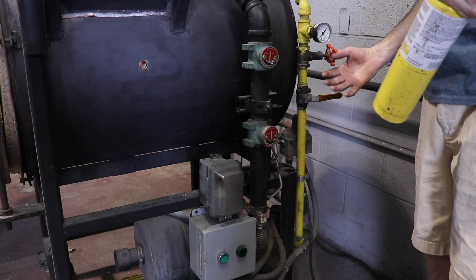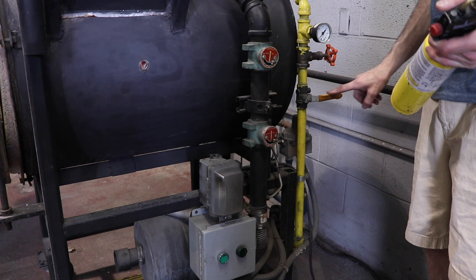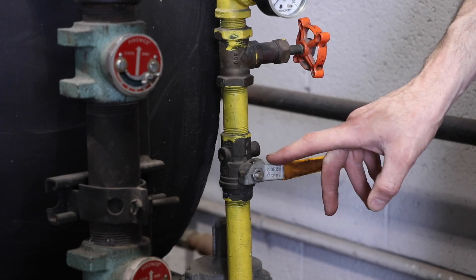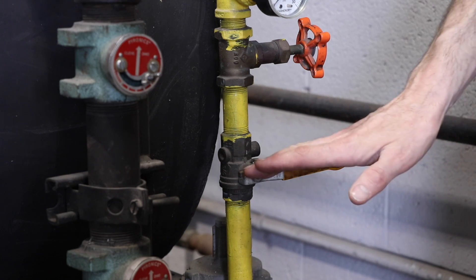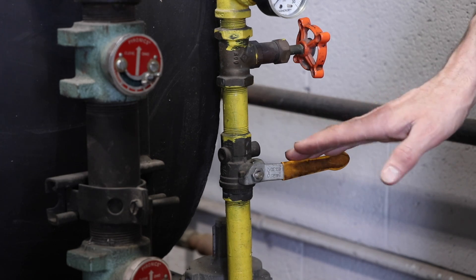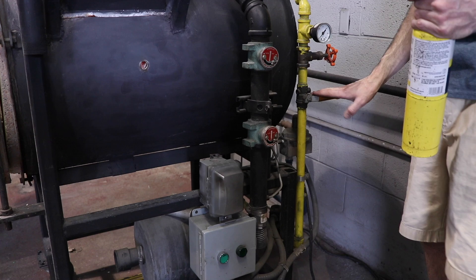So the first thing you do when you light a glory hole is make sure the final gas valve is off. Right now, the arm of the valve is perpendicular to the gas line, which means it's off. When it's parallel and inline, that means it's on. First thing you do is make sure the final gas valve is off.